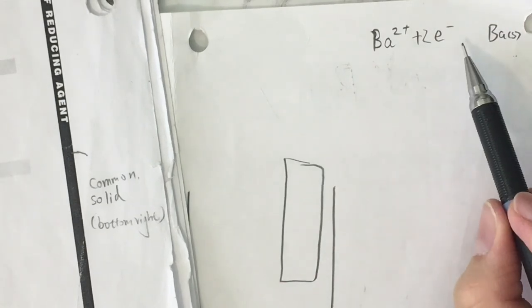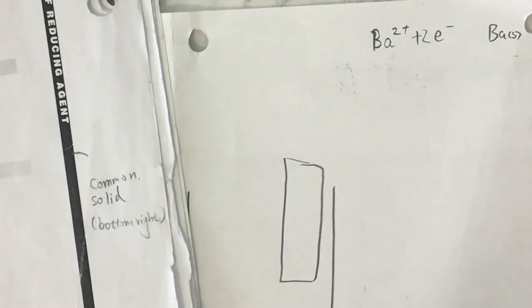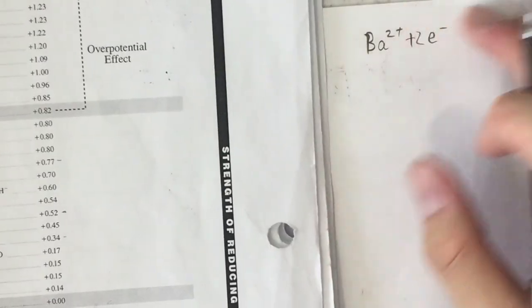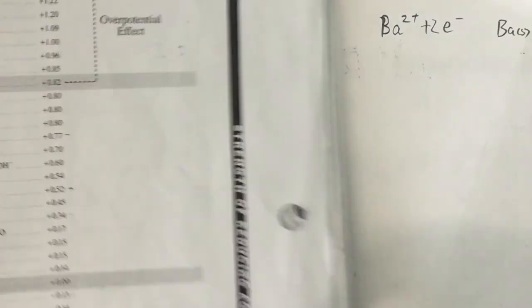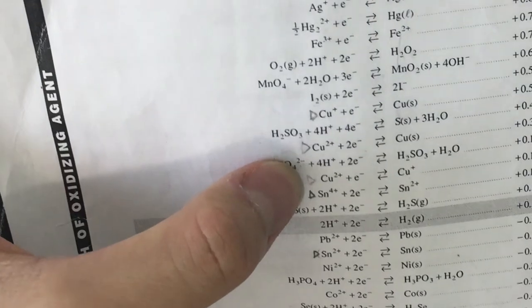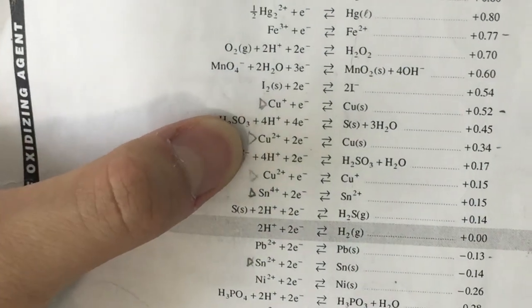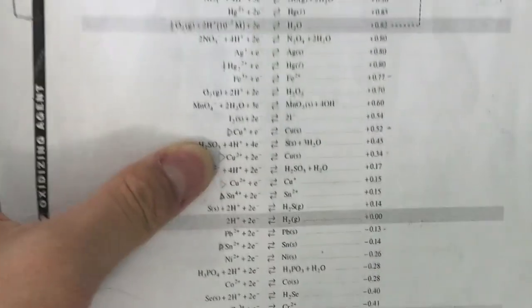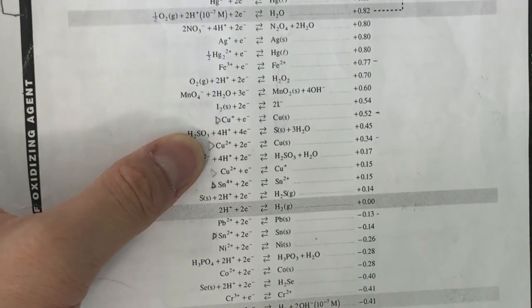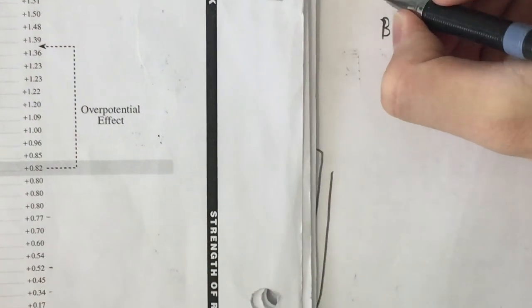You may notice that I did not write any arrow — that's on purpose, because we don't know which way it's going to go. Remember to leave some space for the other element. The other one is copper. Copper²⁺ plus two electrons equals copper solid. Let's write that down. Because copper has a higher position than barium on the table, we write copper above barium.